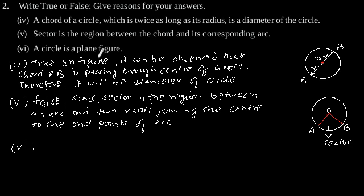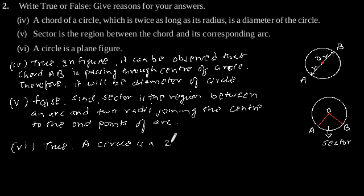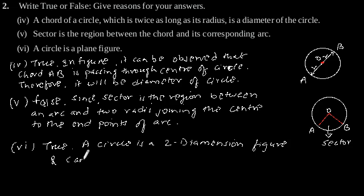Sixth: a circle is a plane figure. This statement is true, since a circle is a two-dimensional figure and therefore can be referred to as a plane figure.